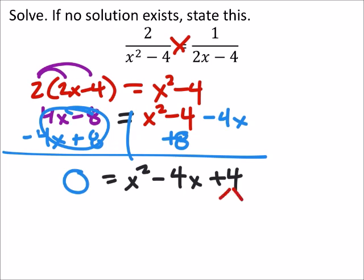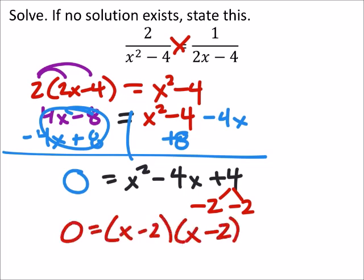I need two factors of 4 that add up to negative 4. Looks like we're going to need both of these to be negative, specifically negative 2.